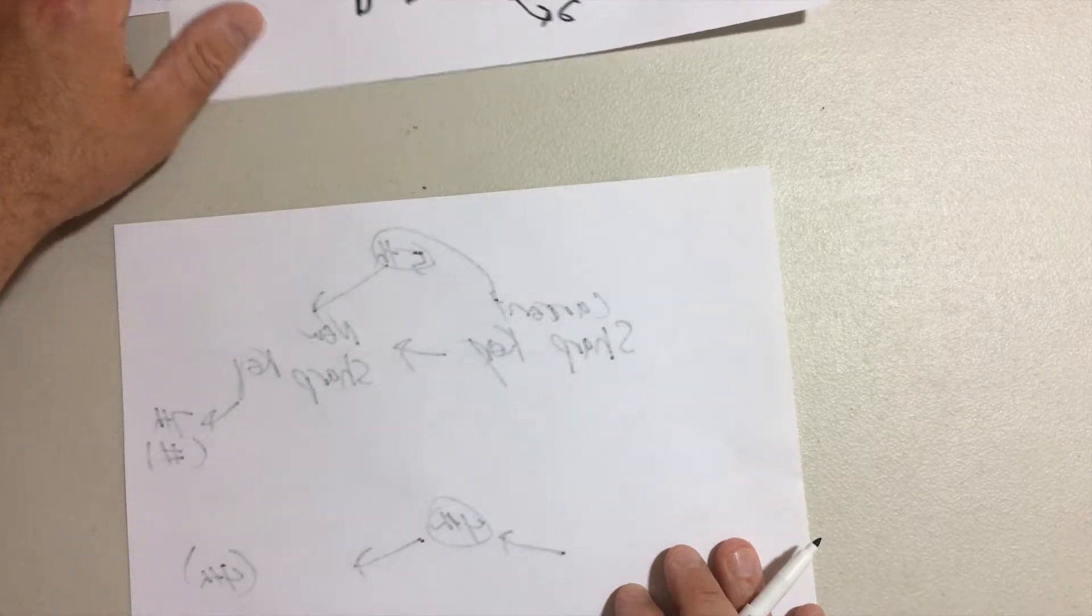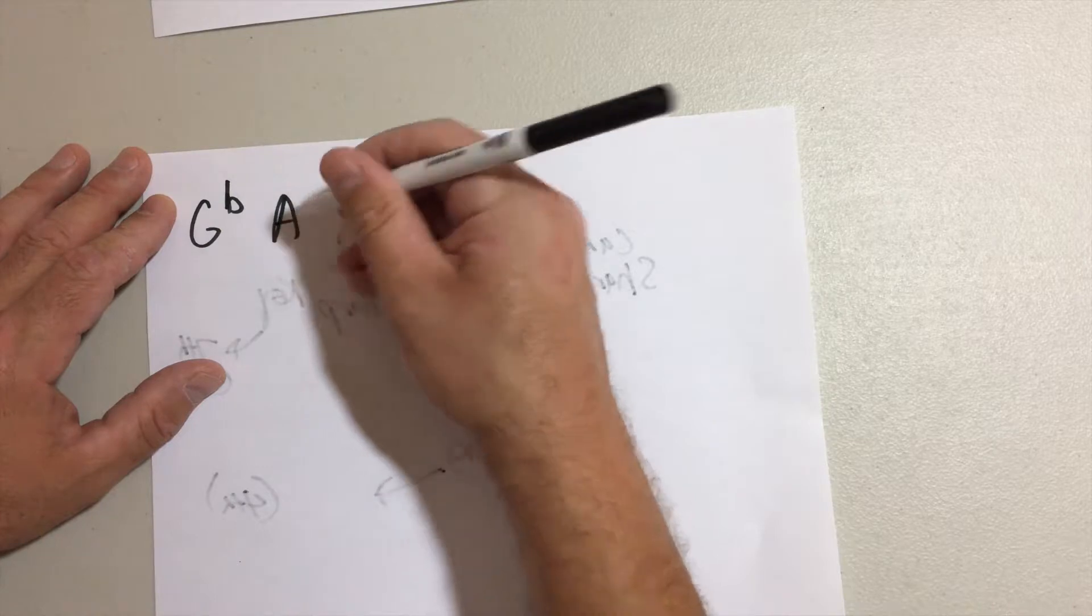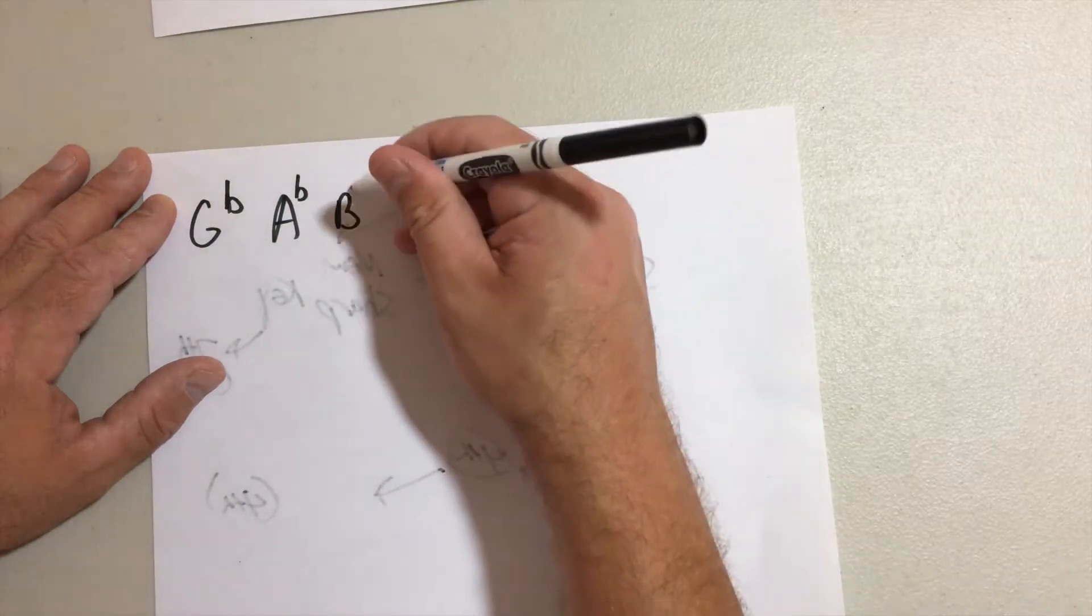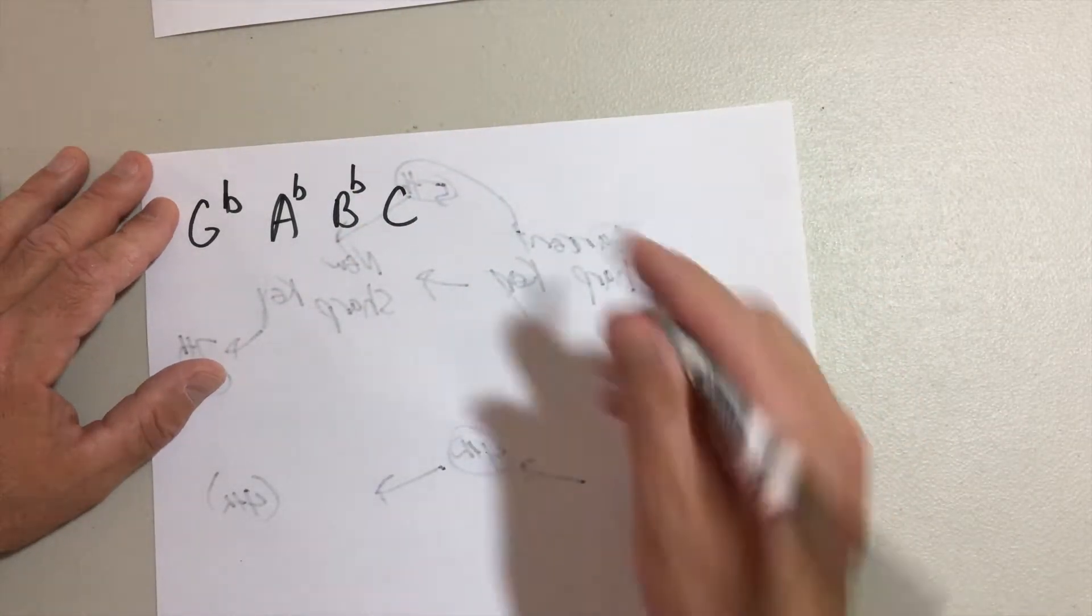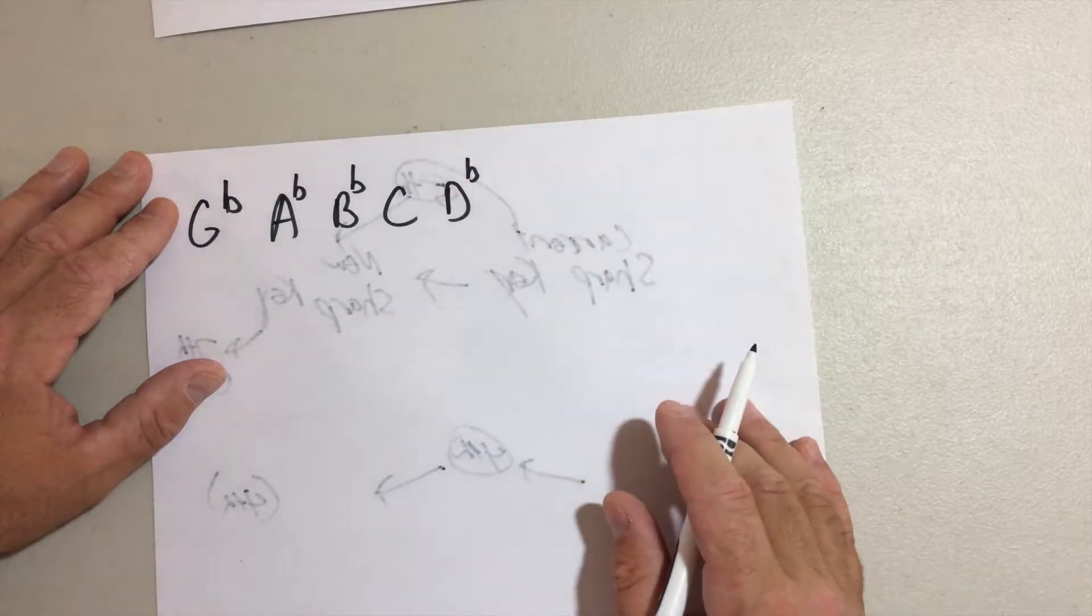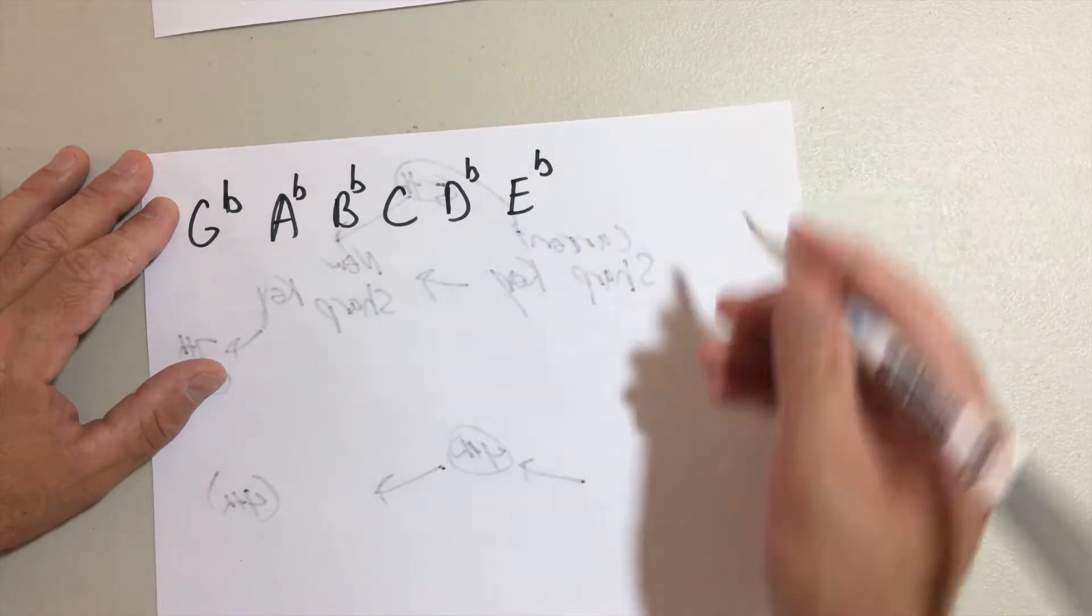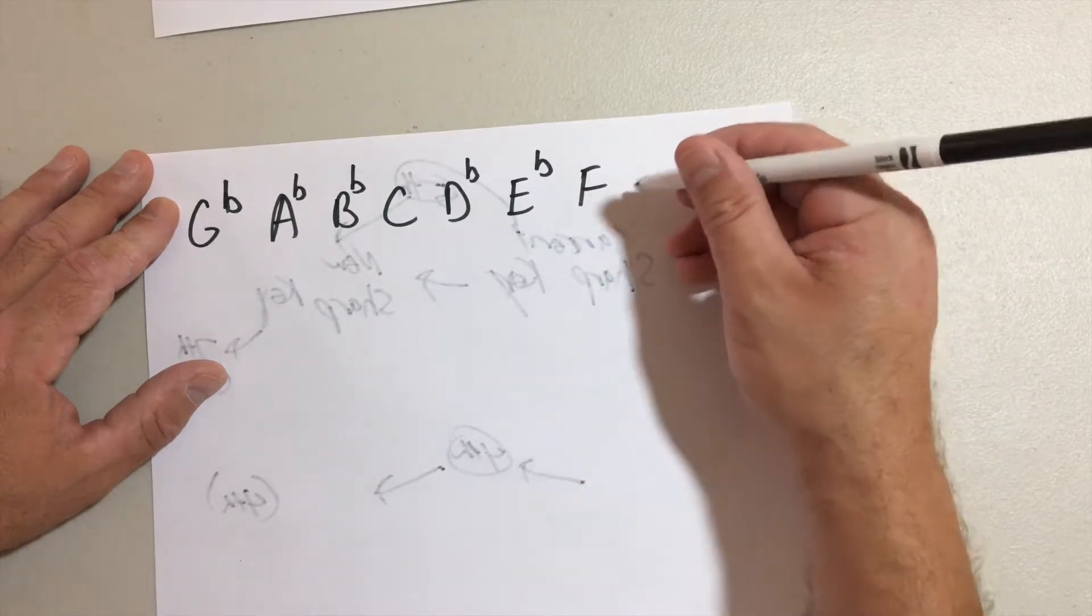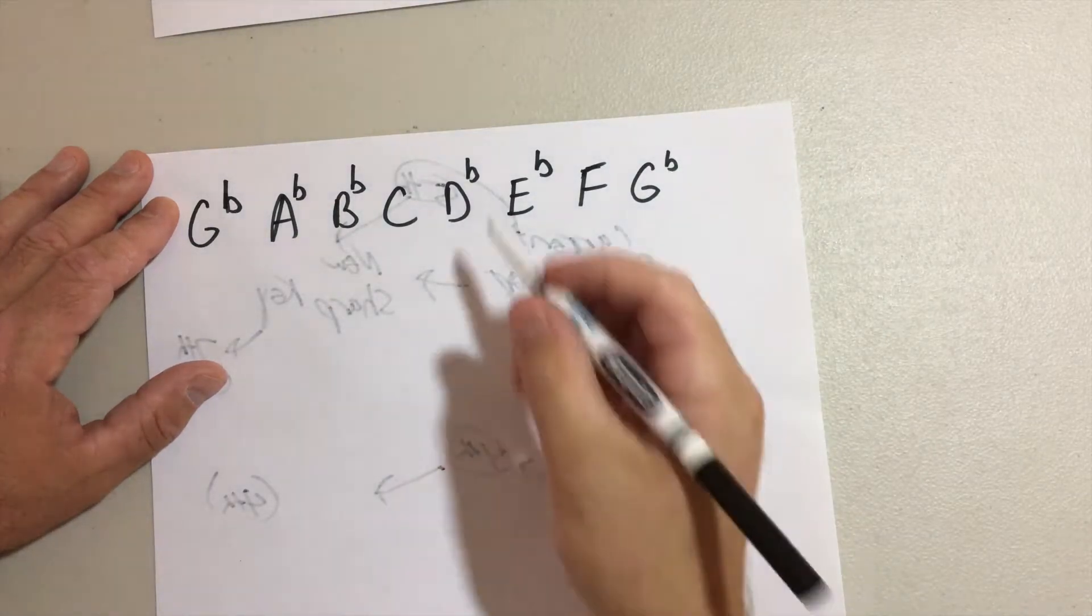So let's go from there. G flat, A. Remember from before that previous keys had a flat on A. B also had a flat. C so far didn't pick up any flats. The last key was D flat, and then E has already also been flat. F is still natural, and then we have G flat.